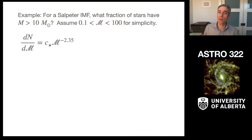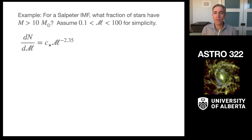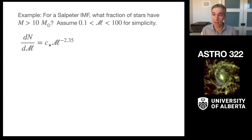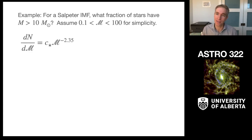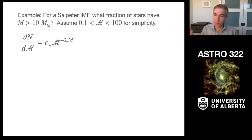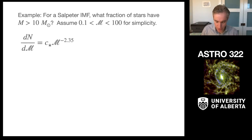The first example I want to start with says: for a Salpeter IMF, what fraction of stars have a mass greater than 10 solar masses? For simplicity, I want to consider the range of masses to run from 0.1 to 100 solar masses. It would be 0.07 all the way up to about 300 or so if we're going to be precise, but we'll stick with this simpler functional form for now.